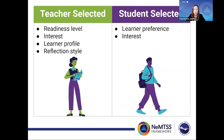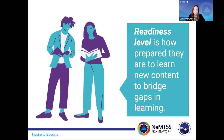Flexible groups may also be long-term or short-term. For example, a seating chart may consist of a four-student flexible group that stands for up to nine weeks. An example of a short-term flexible group would be an expert group or a quick partner share. Readiness level refers to how prepared students are to learn new content, to bridge gaps in learning — otherwise known as the zone of proximal development.